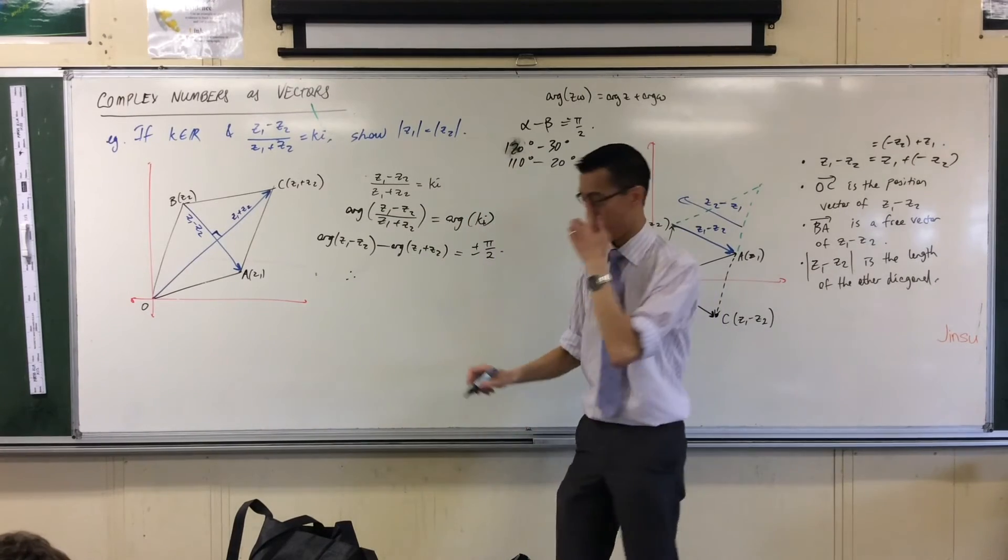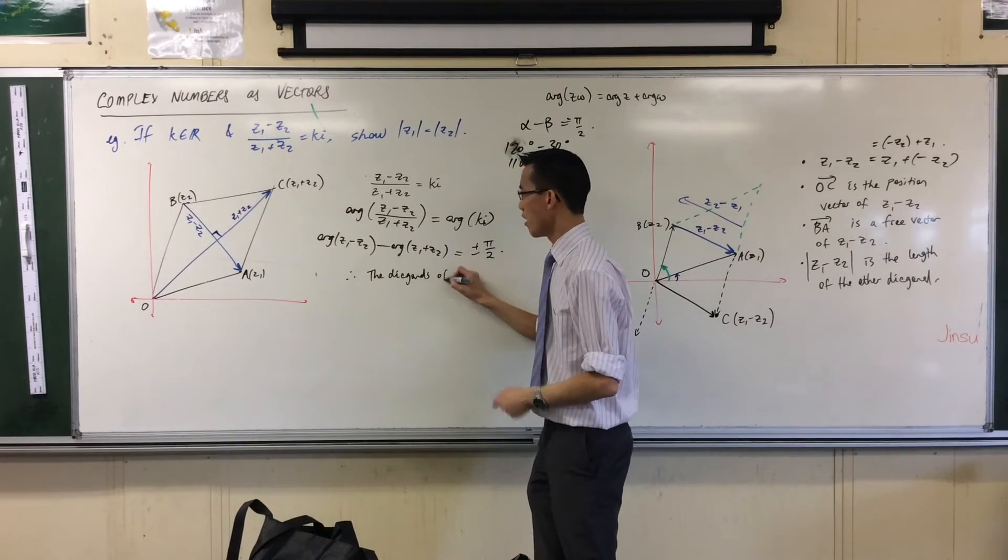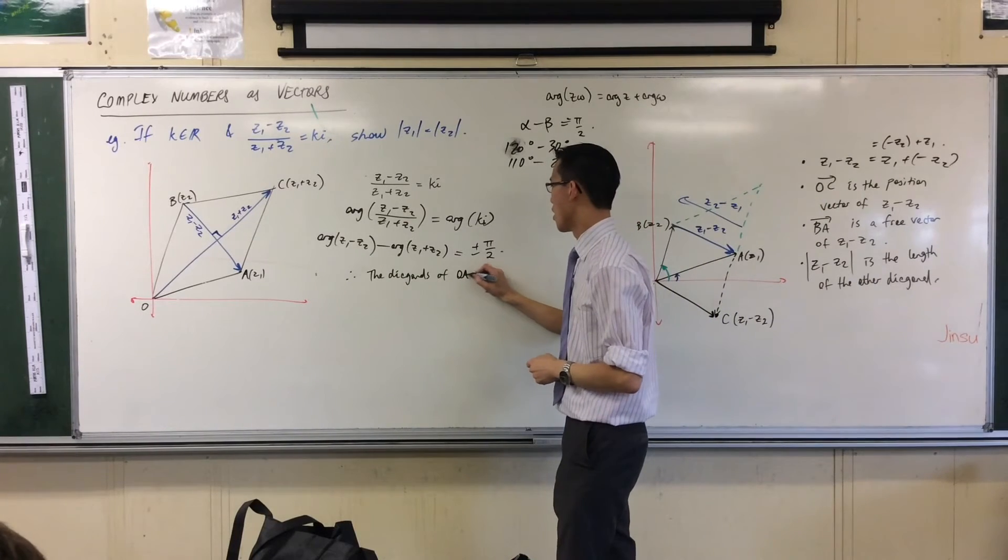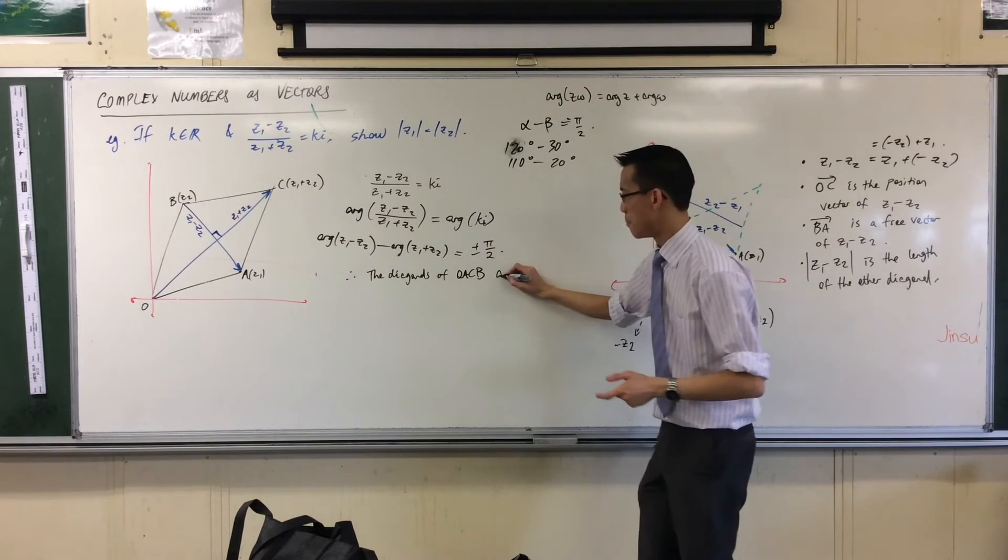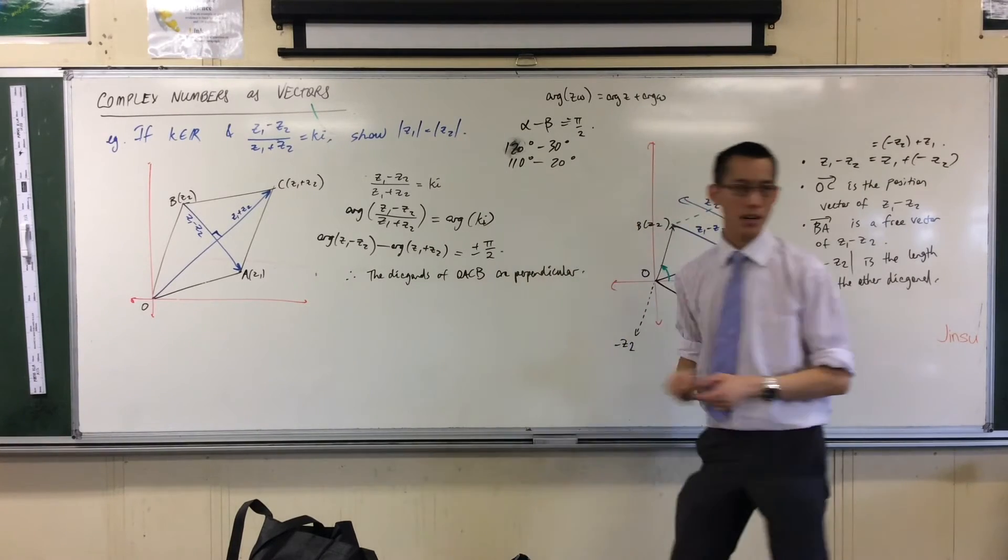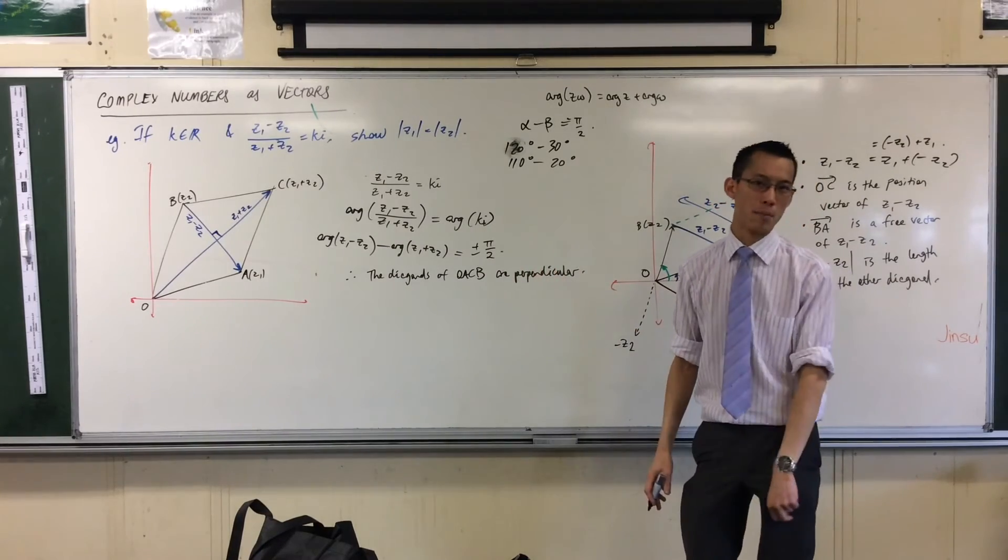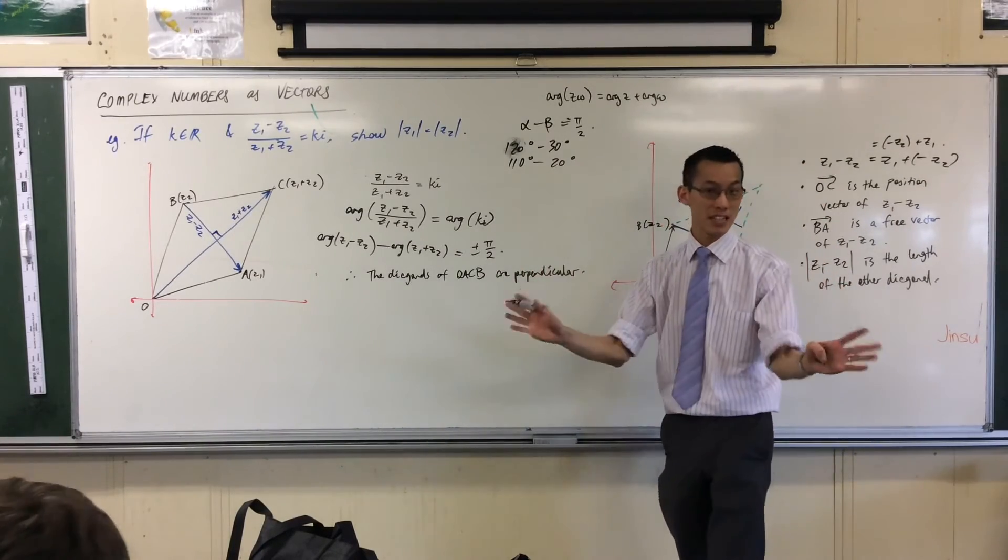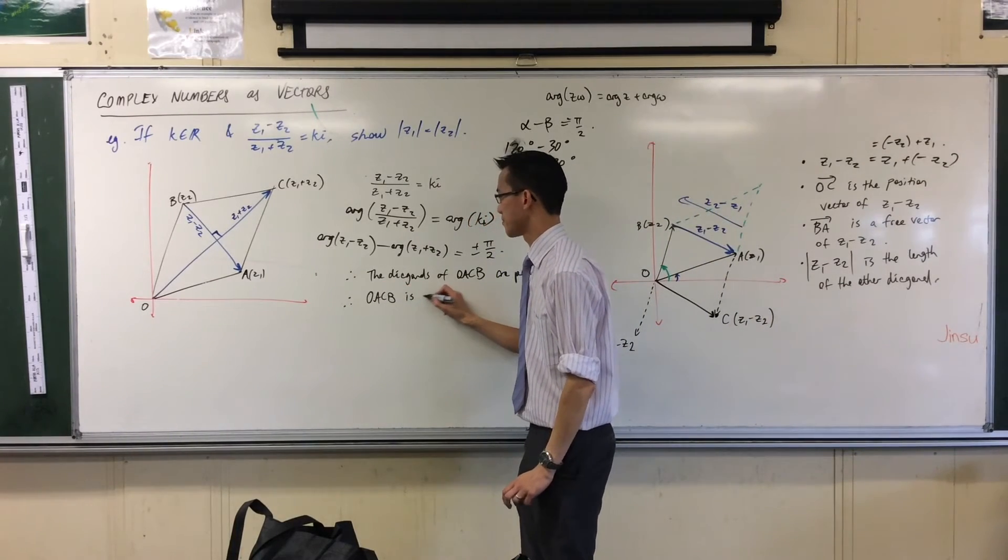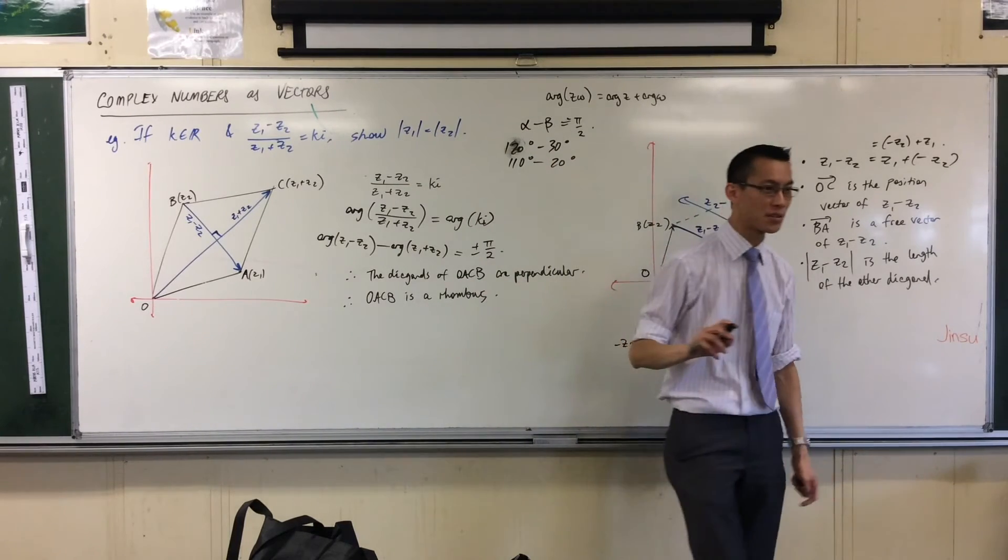Therefore, the diagonals of this parallelogram I've named OACB are perpendicular. If the diagonals are perpendicular and I already know it's a parallelogram, it must be a rhombus. It might even be a square, but I don't need to know that. Therefore OACB is a rhombus.